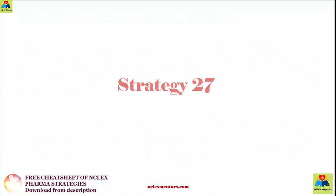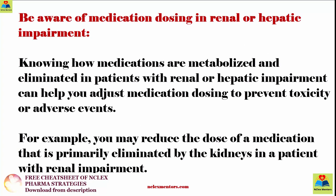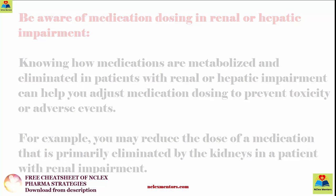Be aware of medication dosing in renal or hepatic impairment. Knowing how medications are metabolized and eliminated in patients with renal or hepatic impairment can help you adjust medication dosing to prevent toxicity or adverse events. For example, you may reduce the dose of a medication that is primarily eliminated by the kidneys in a patient with renal impairment.